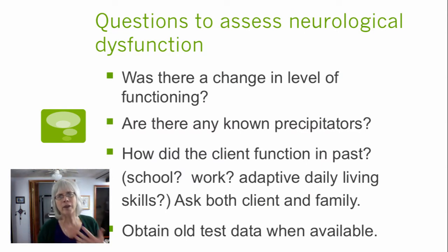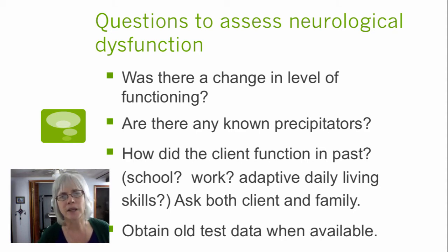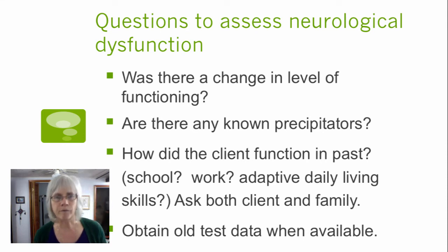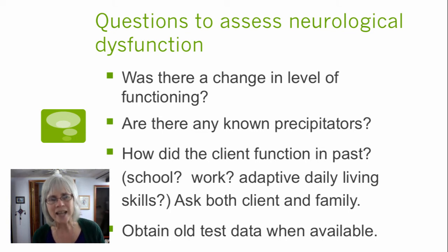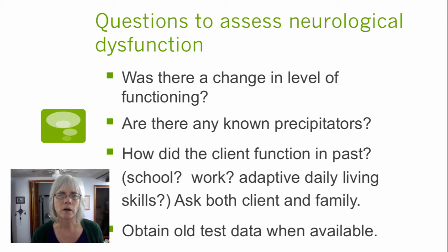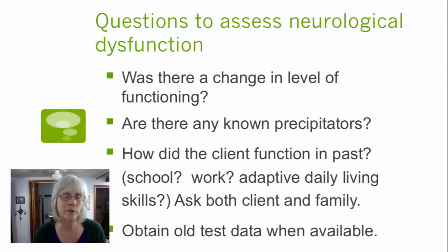When thinking about assessing neurological dysfunction, we're considering a number of different kinds of things. Sometimes there is an interview done with that person or with family members. We're going to think about whether there is a change in level of functioning. If, for example, the woman in the video has been functioning at this level throughout her entire lifespan, instead of diagnosing Alzheimer's, we would be thinking about diagnosing intellectual disability. So on the exam, one rule-out to consider is: is this intellectual disability or is this Alzheimer's or some other kind of dementia?